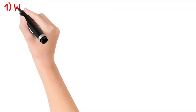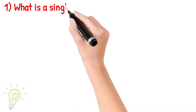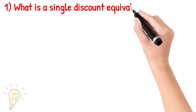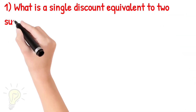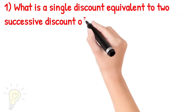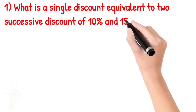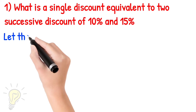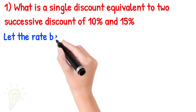The first question is: what is the single discount equivalent to the successive application of two discounts of 10% and 15%? We are going to calculate the total combined discount.